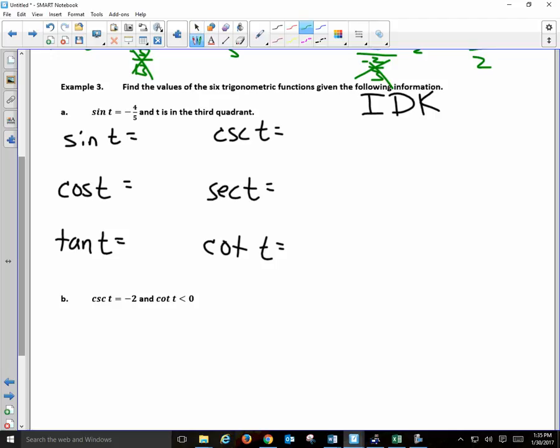Because it says, sine of T is negative four-fifths. Find all six. So what should I write down? Which one do I already know? Sine of T is what? And cosecant? I could teach my six-year-old daughter to do that. After that, it's a little bit difficult.